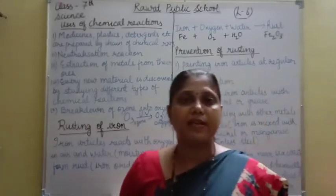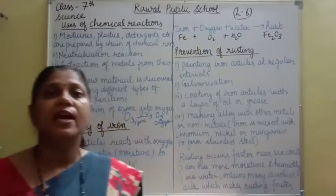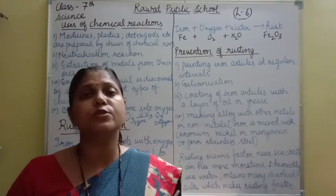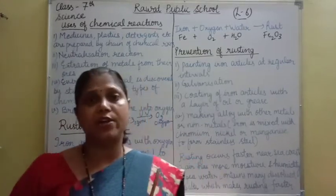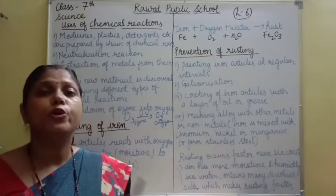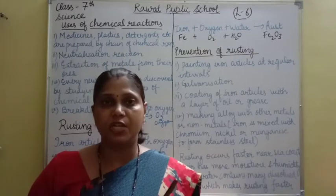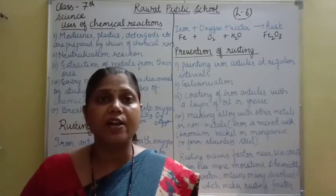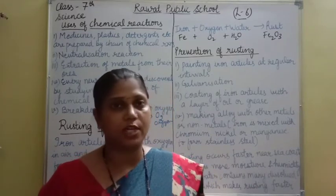Now coming to the next process — that is rusting of iron. Rusting kya hota hai? Rusting is the formation of a new product, a new substance — that is iron oxide. Rust ko hum scientifically iron oxide kehte hai. Iron oxide form hota hai, and two conditions are necessary for that. Doh cheezon ki requirement hai — air and water, means oxygen and moisture. Jab bhi iron article air or water ki contact mein aayega, it starts forming iron oxide, means it starts forming rust.